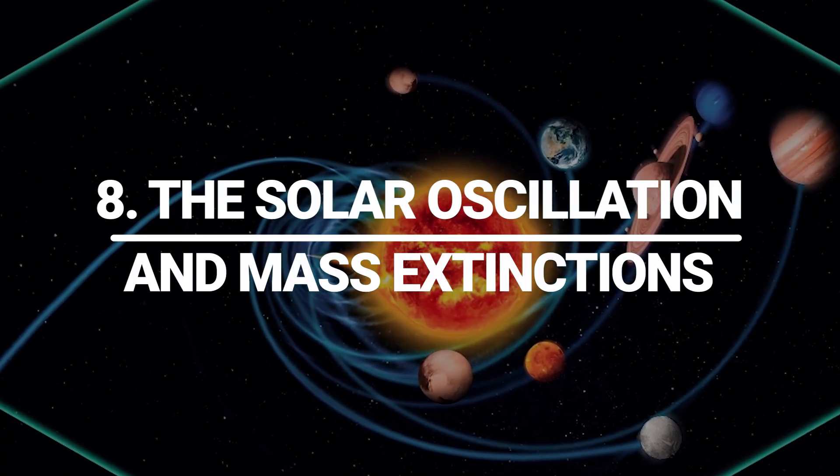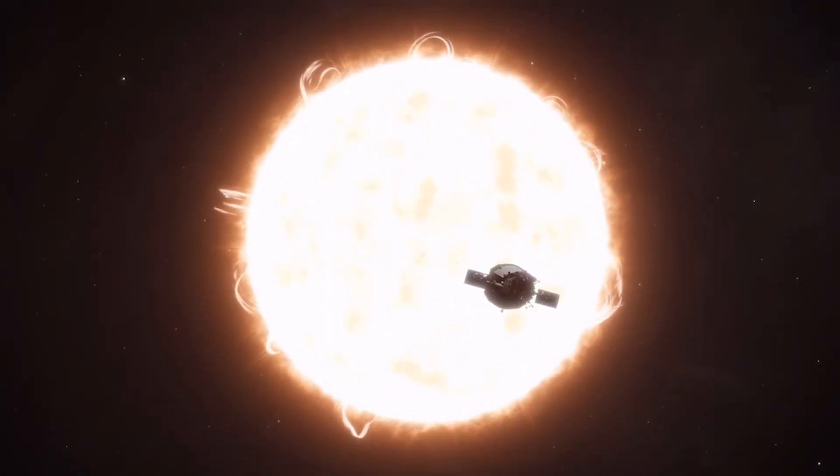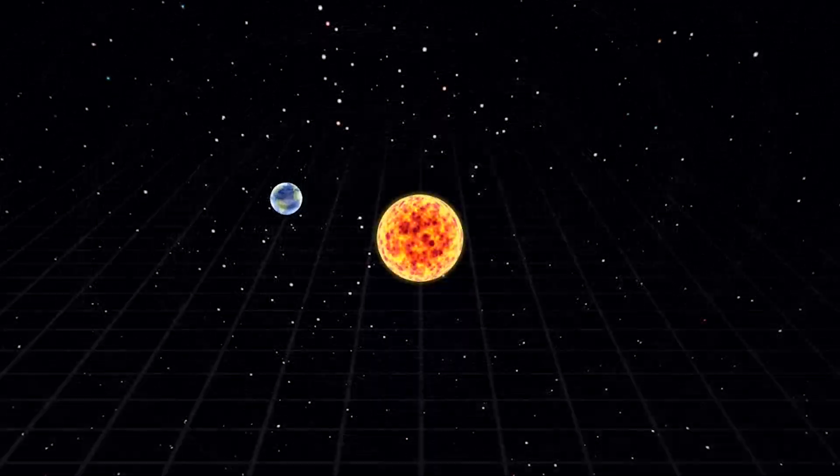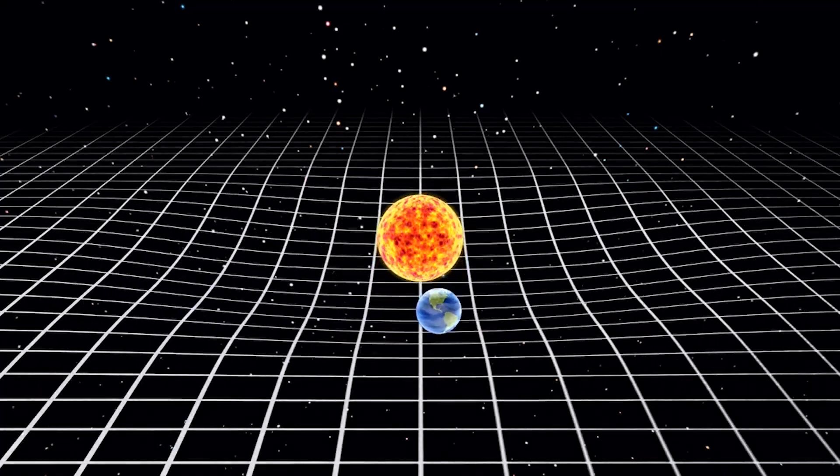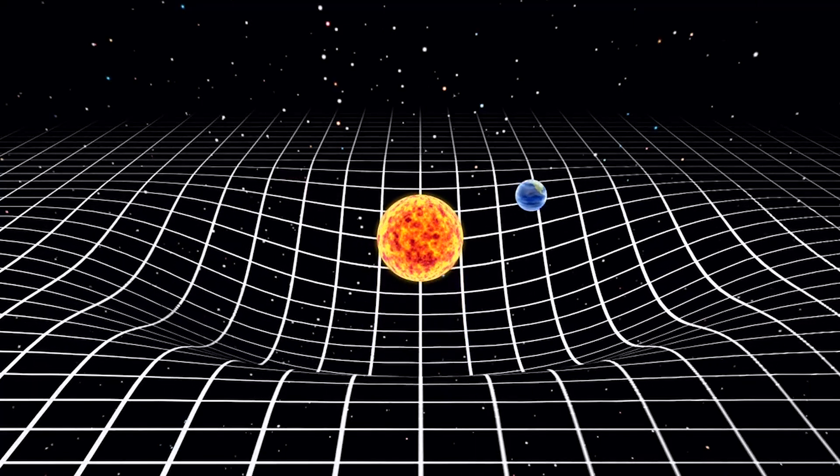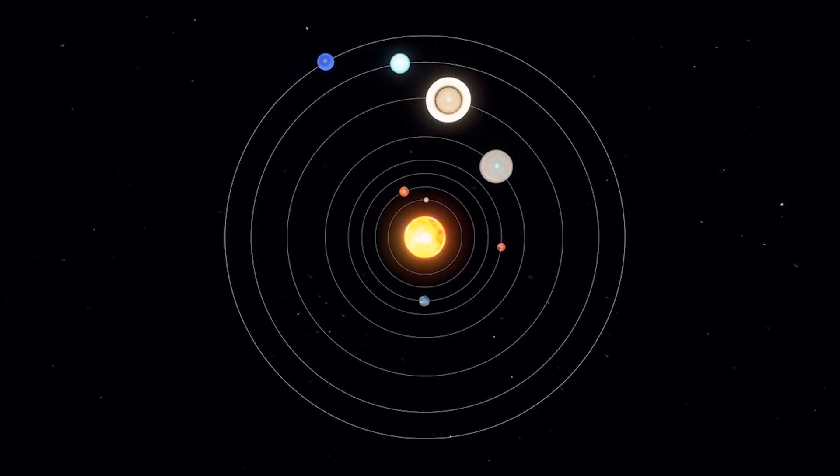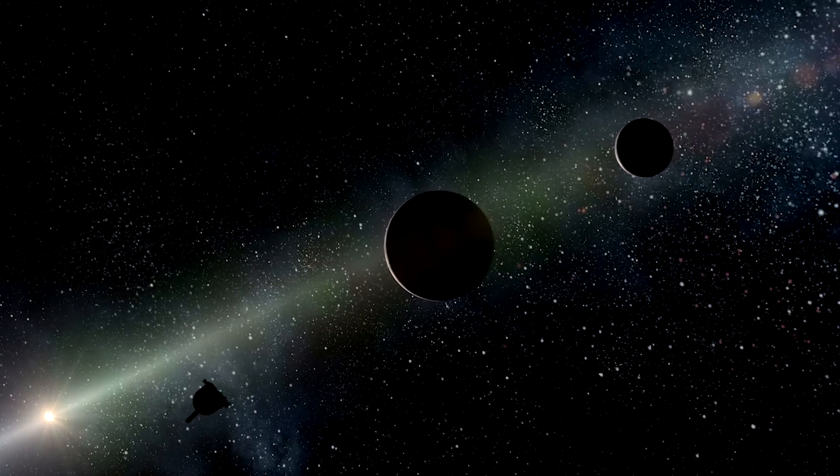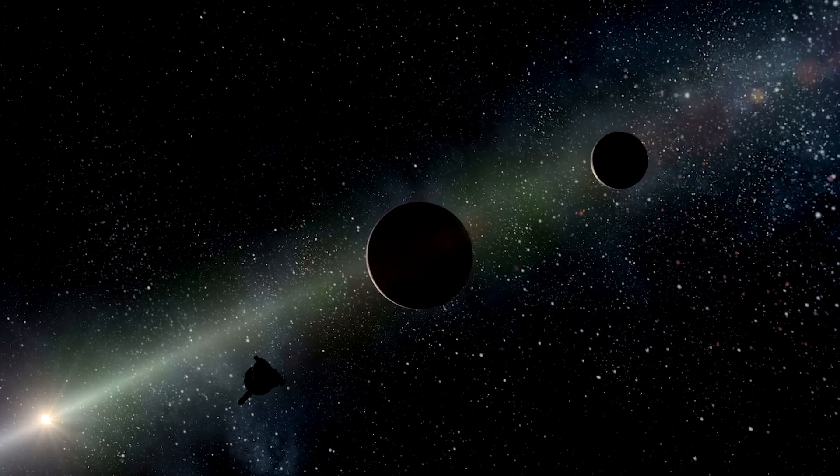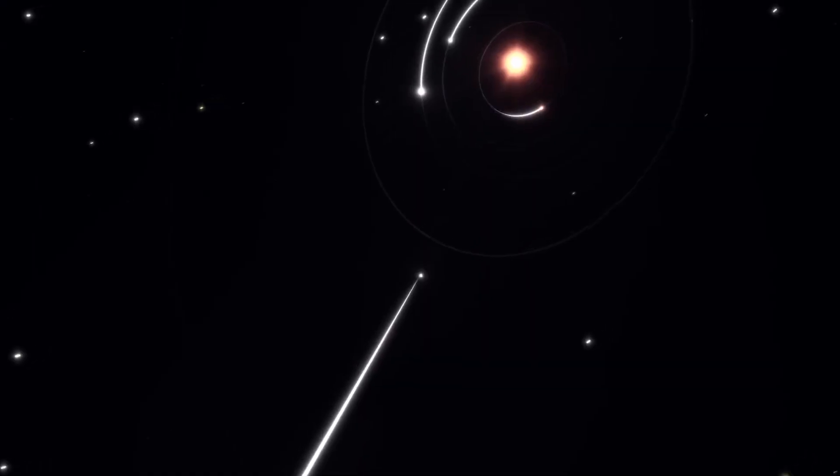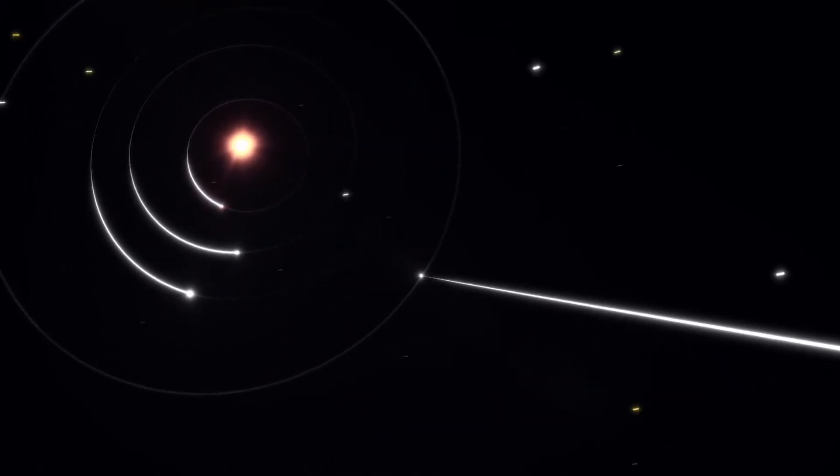The solar oscillation and mass extinctions. Every 32 million years, the Sun crosses the galactic midplane, plunging alternately above and below by up to 250 light-years. Some paleontologists notice a faint rhythm in Earth's fossil record close to that period, a pulse of extinctions and cratering events. One hypothesis links the timing to increased comet showers whenever the Sun pierces the dense disk, disturbing the Oort cloud.